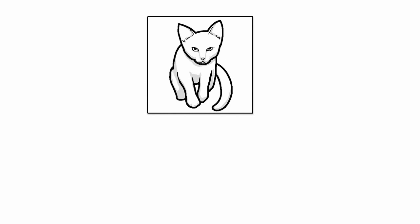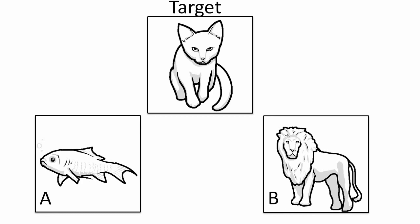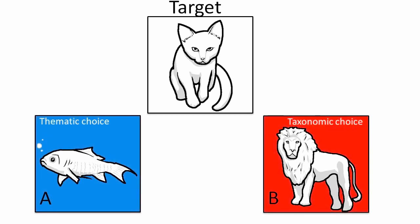Here's an example of how they did this kind of research. You're shown a target image and asked which of two choices goes with the target. If you picked choice A, that's the thematic choice, because those two objects interact. But if you picked choice B, that's the more taxonomic choice, because the target and choice B are in the same taxonomic category. By doing experiments like this, they were able to find out that, because of education, people tend to lean more towards taxonomics.